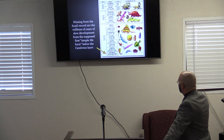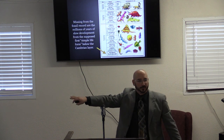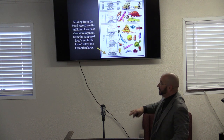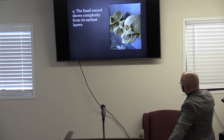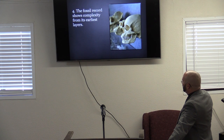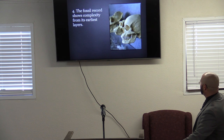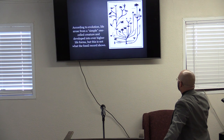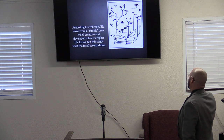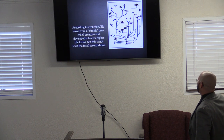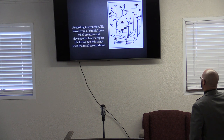Remember, they say we started off very simple at the bottom with simple-celled organisms and then grew more complex. But the fossil record shows complexity from the very beginning — even in that so-called simple cell, it's very complex. According to evolution, life arose from a simple one-celled creature and developed into higher life forms, but this is not what the fossil record shows.